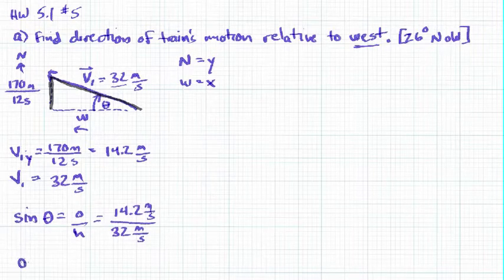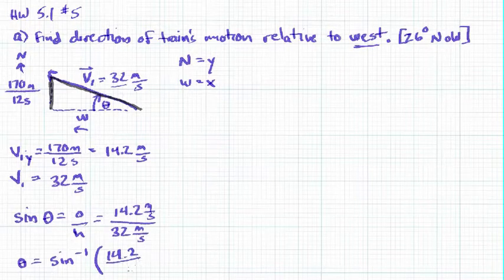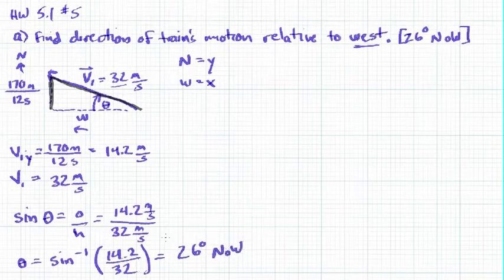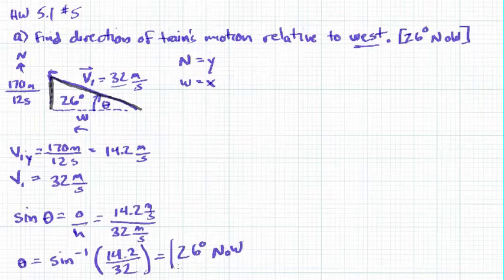We want to solve for theta itself, and that means theta is the inverse sine of 14.2 over 32. Does that make sense? We're solving for that angle based off the horizontal — off the west. Inverse sine of 14.2 over 32 comes out to be 26 degrees — 26 degrees north of west. So this is 26 degrees right there; that's our answer for part A.